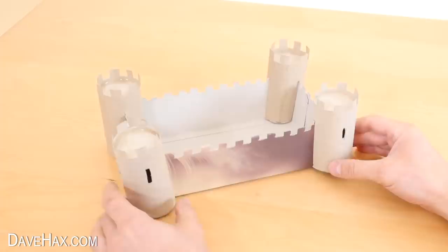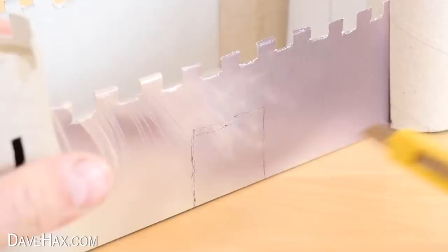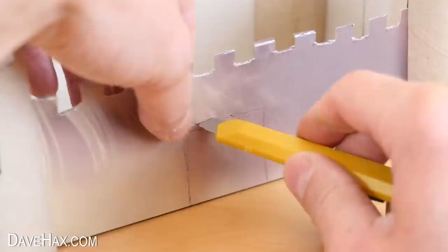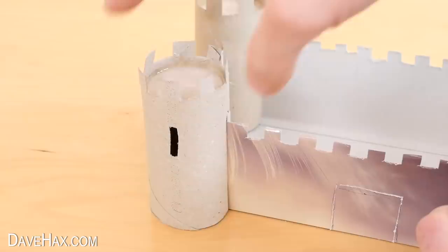I drew on a drawbridge door and cut it out leaving it connected at the bottom. Then to fix any wobble on the turrets, I glued them in place too.